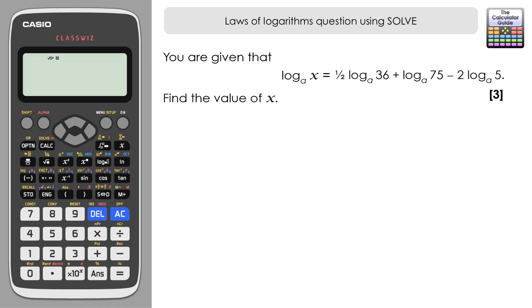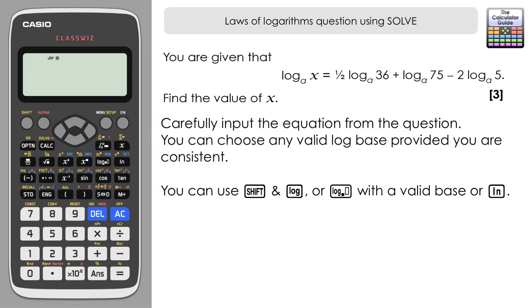The first step I'm going to take is to actually solve this using the solver on the ClassWiz, so I'm going to carefully input this. We need to choose the base of a logarithm. The question just has a base of a, which can be any valid base as long as it's consistent throughout all four logarithms. I'm going to use the standard log, which is log with a base of 10. You can access that by pressing shift and then the negative number button - you can see log written above that.